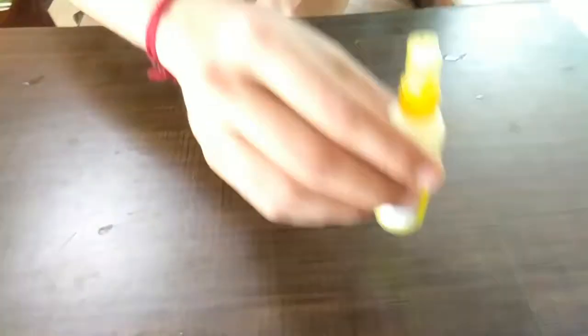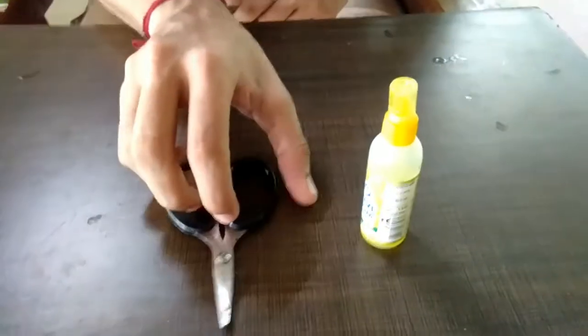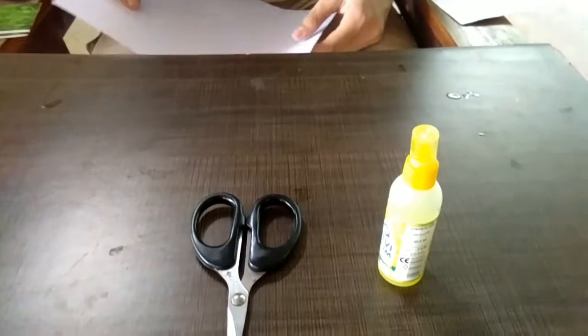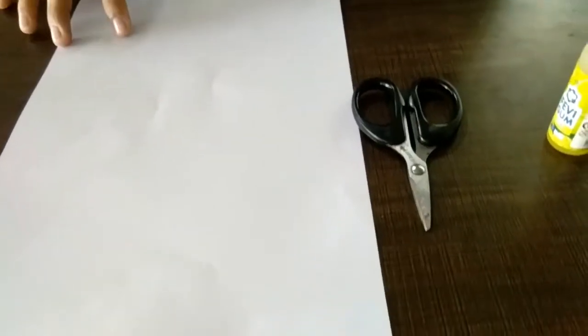Now, we look how to make this card. We need three main things. The first one is glue and the second one is scissors and the third main ingredient, the paper. You can also use any paper you want. I take this. In this video, I take a four shape paper.